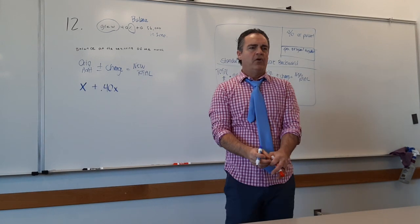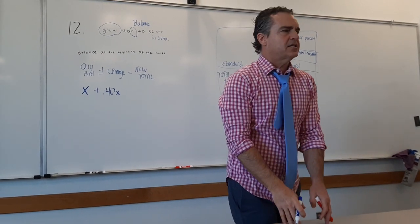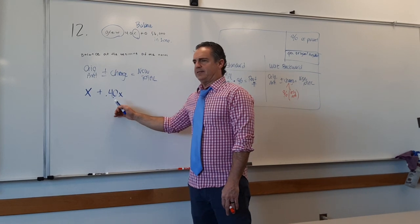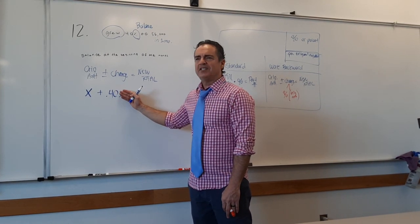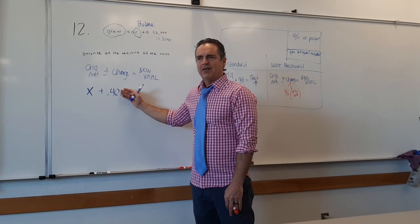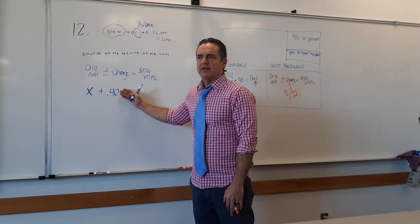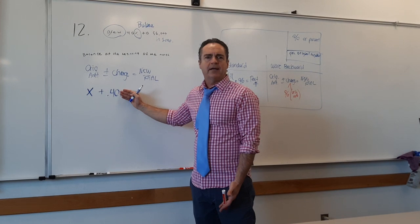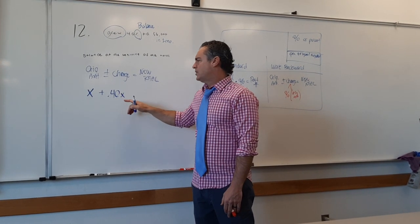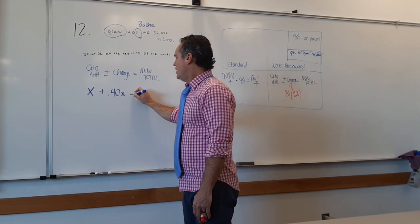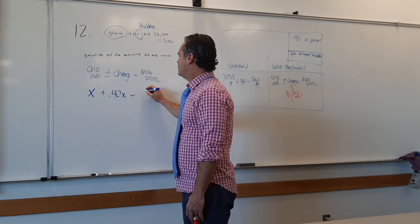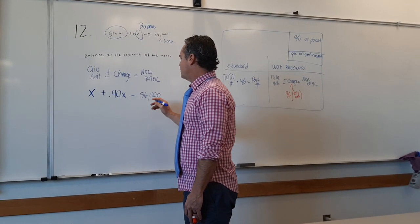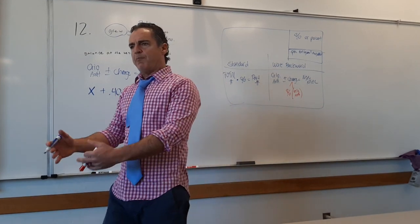We're not adding 40 cents. If we got rid of the x, we'd just be adding 40 cents — that doesn't make sense. It's 40% of x. And this equals his new total, his new balance of $56,000. So the question was: what was the balance to begin with? We're working backward in time.